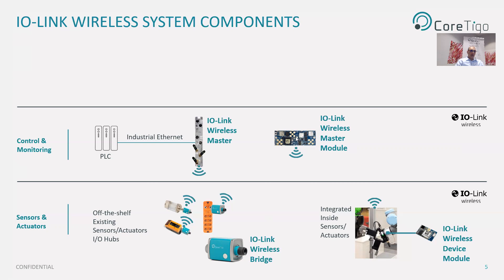Similar to the devices, the master can also come in the form of a module that can be embedded and integrated into other communication products. As you can see, the printed circuit board module includes the full IO-Link Wireless stack and implementation for an IO-Link master along with the physical radio components.